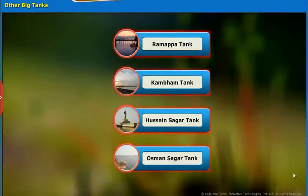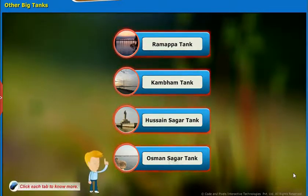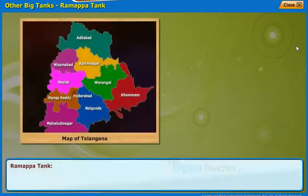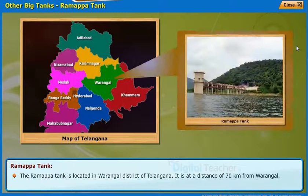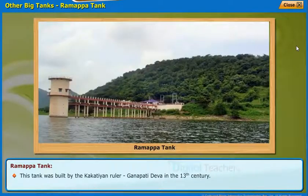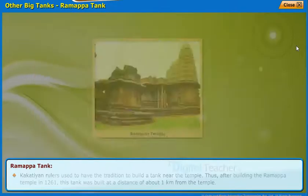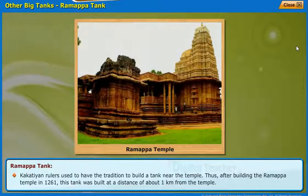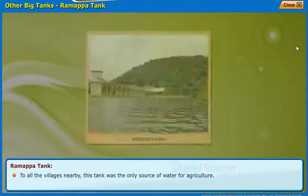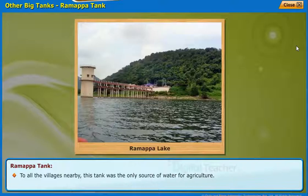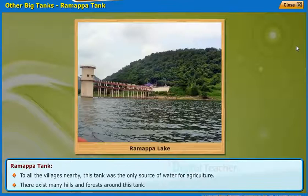Like Nagula Chiruvu, there are many other big tanks. Let us know about some of them: Ramappa tank, Kambam tank, Hussein Sagar tank, and Usman Sagar tank. The Ramappa tank is located in Warangal district of Telangana, at a distance of 70 km from Warangal. This tank was built by the Kakatiya ruler Ganapati Deva in the 13th century. Kakatiya rulers had the tradition to build a tank near the temple. After building the Ramappa temple in 1261, this tank was built about 1 km from the temple. It was the only source of water for agriculture for all the nearby villages. There exist many hills and forests around this tank.